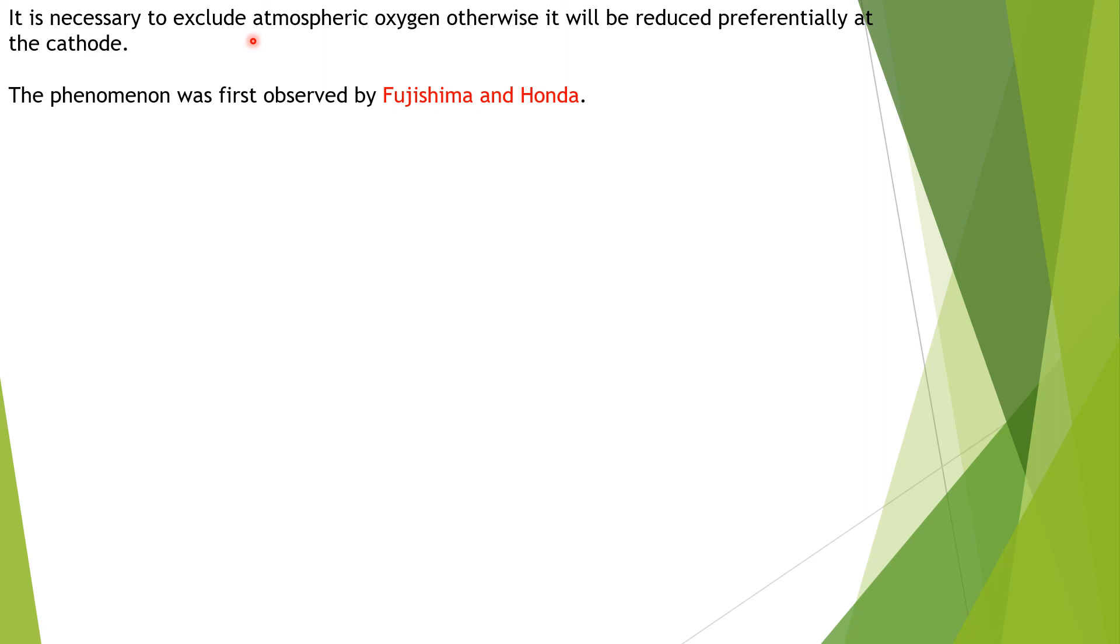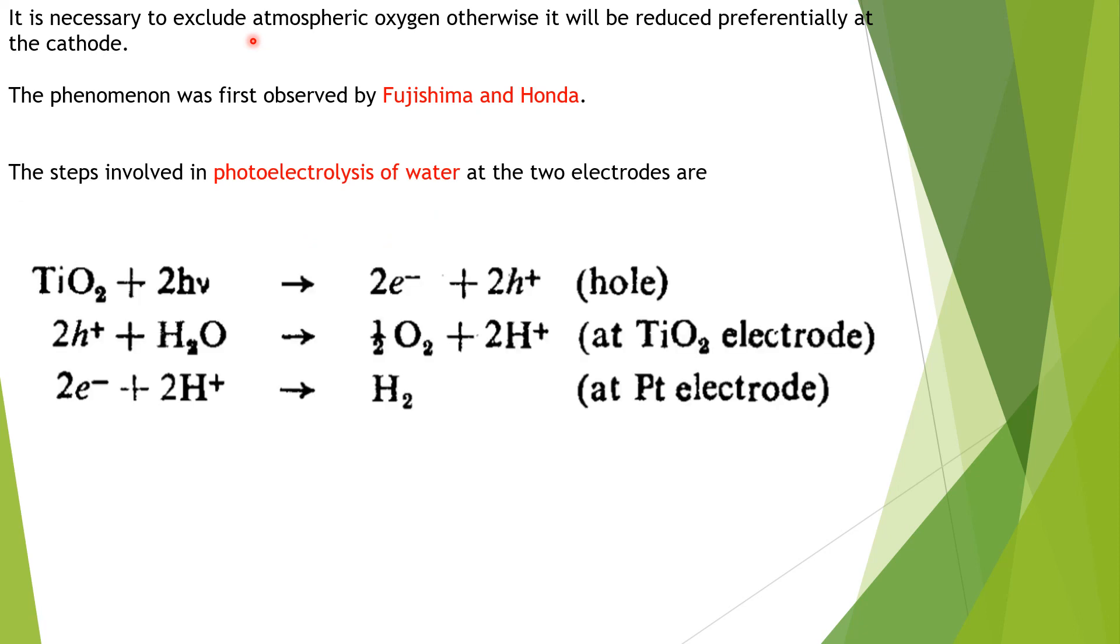The phenomena was observed by Fujishima and Honda. They have given some steps for photoelectrolysis of water at the two electrodes. Initially, the semiconductor electrode, which is titanium dioxide, on combination with photons is forming two electrons as well as two holes. In the first step, two holes are combining with water at the titanium hydroxide surface and forming oxygen as well as twice H+ ions. Generation of oxygen occurs at the titanium oxide electrode, so it is the oxidation process. In the next step, the two electrons and twice H+ combine at the platinum electrode, forming H2. The hydrogen and oxygen generated can be utilized in fuel cells.